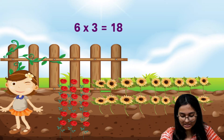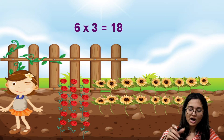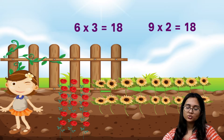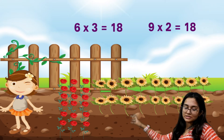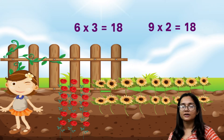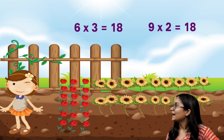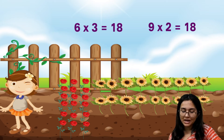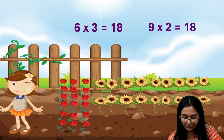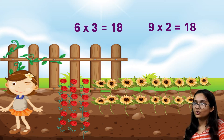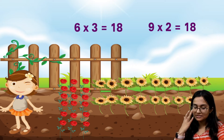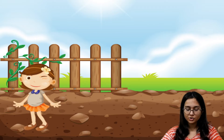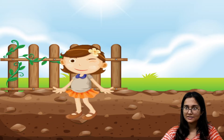Now, what are the ways in which the sunflowers and marigolds are planted? 18 is 2 into 9, so there are 2 rows with 9 plants each. And 18 is 3 into 6, so there are 3 rows with 6 plants each in the case of sunflowers as well. So you too can make your own garden — draw a garden showing flower beds with 48 plants.